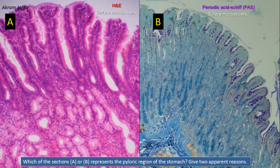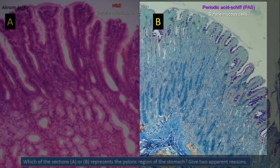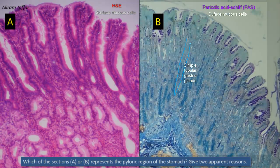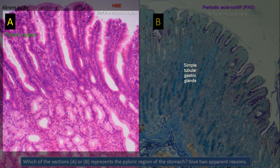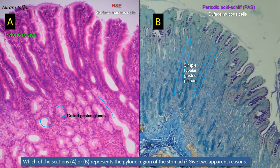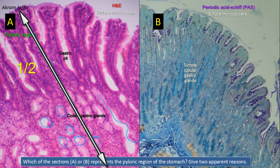Note that in contrast to the simple tubular glands of the fundus and body of the stomach, shown in B, which open into the pits as simple tubular glands, the pyloric glands in A are coiled. So they appear in different profiles — you can see how coiled they are with different profiles here. In addition, it is clear that in the pyloric region, section A, the gastric pits occupy about half the thickness of the pyloric mucosa.